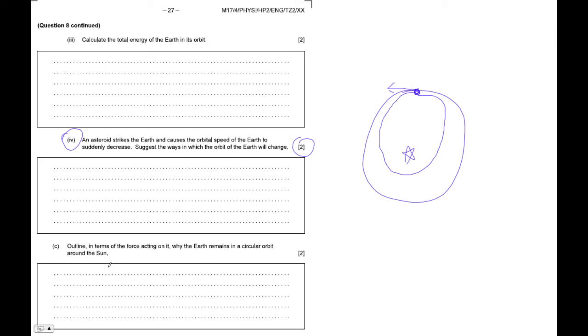And then C says, outline in terms of the force acting on it, why the earth remains in a circular orbit around the sun. If you recall, let's draw another picture here.